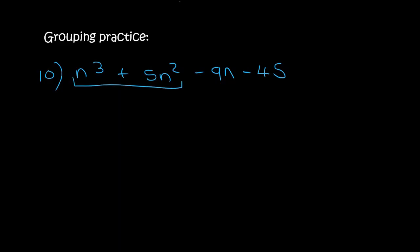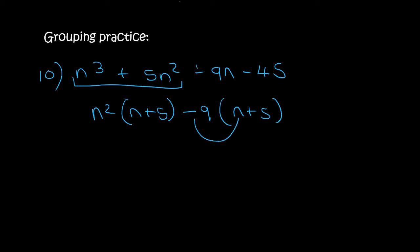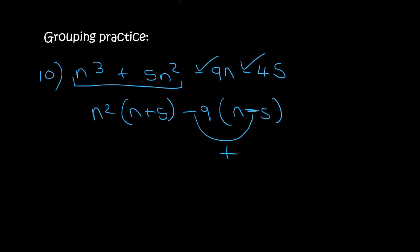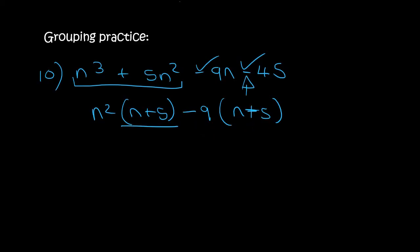In the first two terms we take out n squared and we'd be left with n plus 5. In the second two terms we take out minus 9 and are left with n plus 5. Let's double check: if you multiply those two you get a negative, and if you multiply those two you get a negative — correct. If I changed this to a minus, I would have gotten a positive and that wouldn't match. So n plus 5 is common — we take that out and we're left with n squared minus 9.